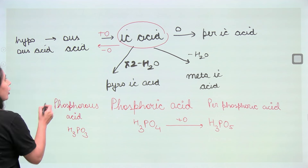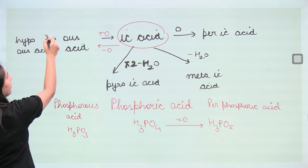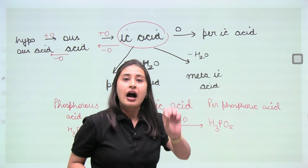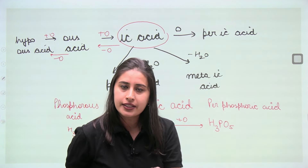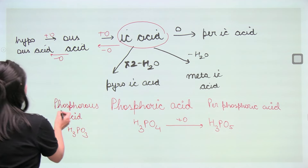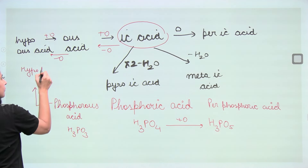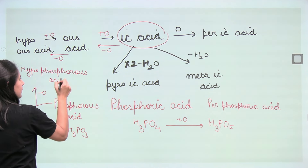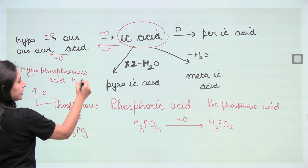Now if from the '-ous' acid we remove one more oxygen, going in the reverse direction from '-ous' acid, we get hypo-'-ous' acid. So from phosphoric acid: remove one oxygen → phosphorous acid; remove one more → hypophosphorous acid. The structure of H3PO2 has PO2.